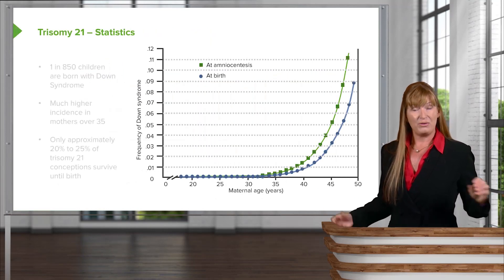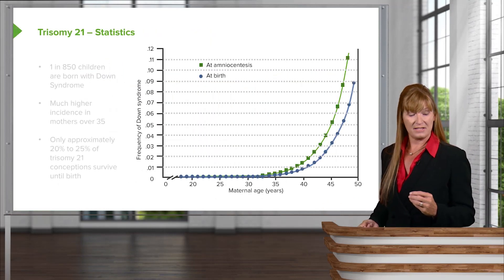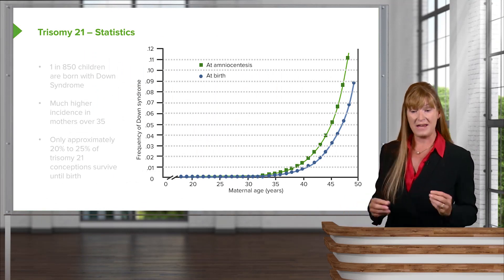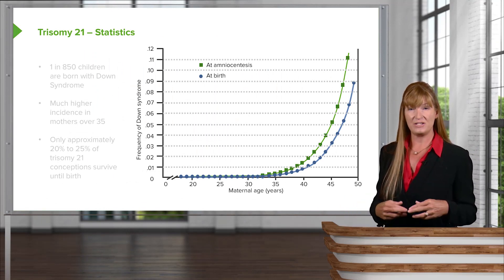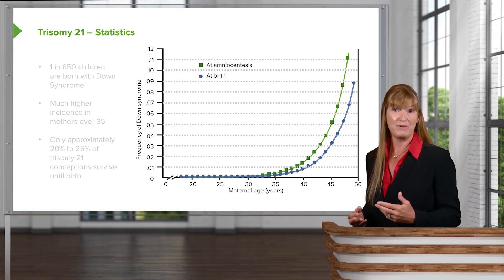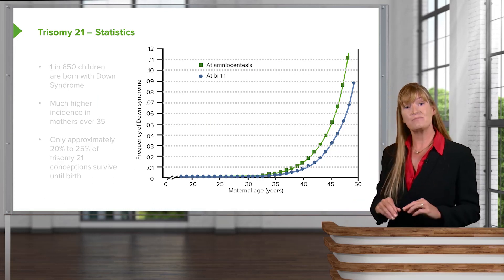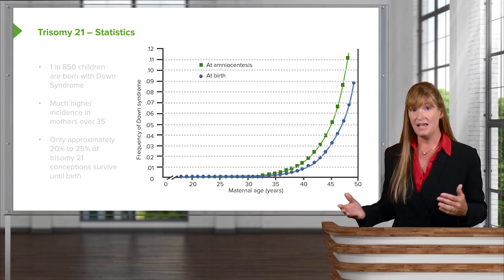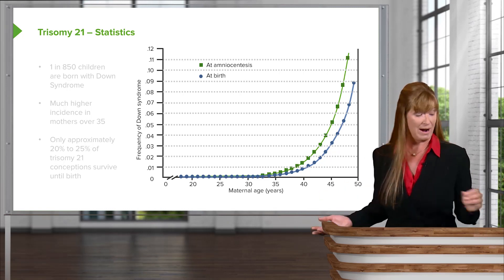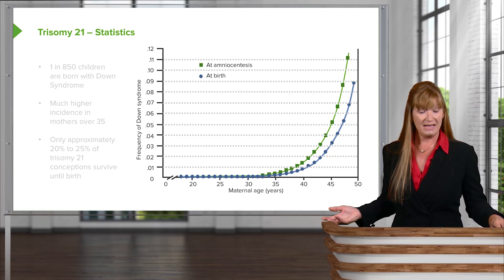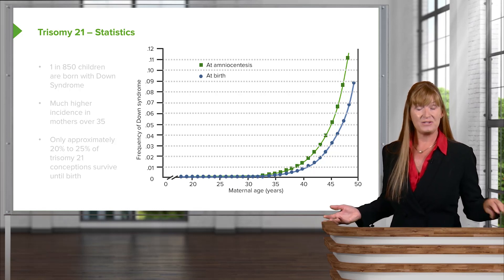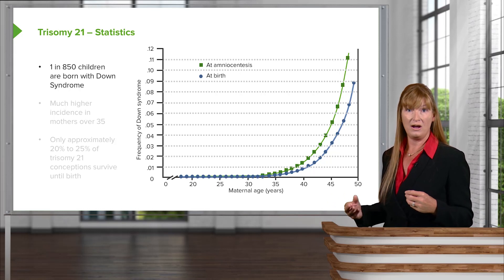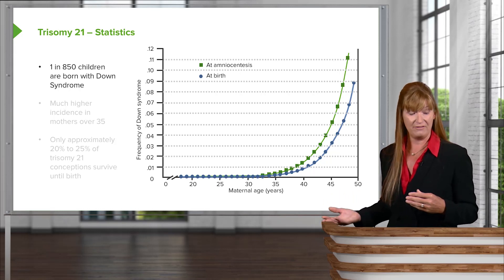You've probably heard that the older a mother is, the more likely we are to see these chromosomal abnormalities. That's because non-disjunction is more likely in older cells with older apparatus. In general, we'll see one in about 850 children born have Down syndrome.